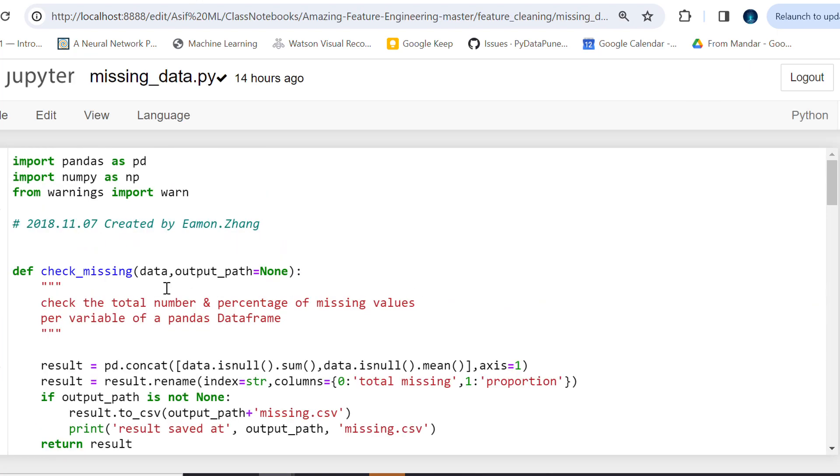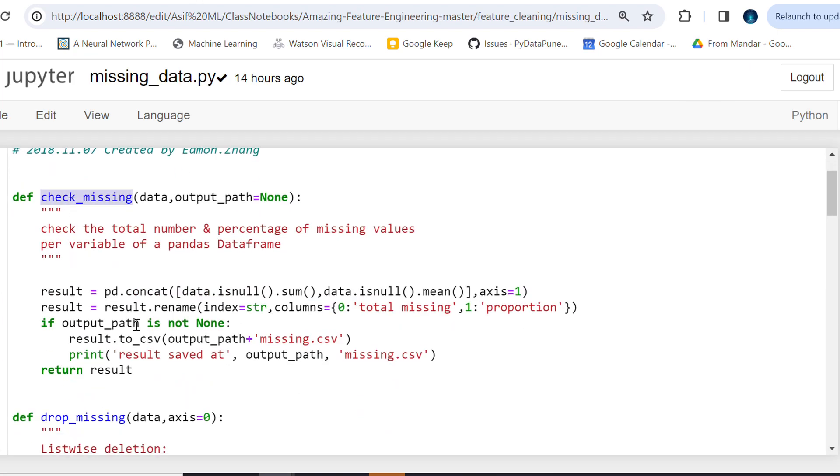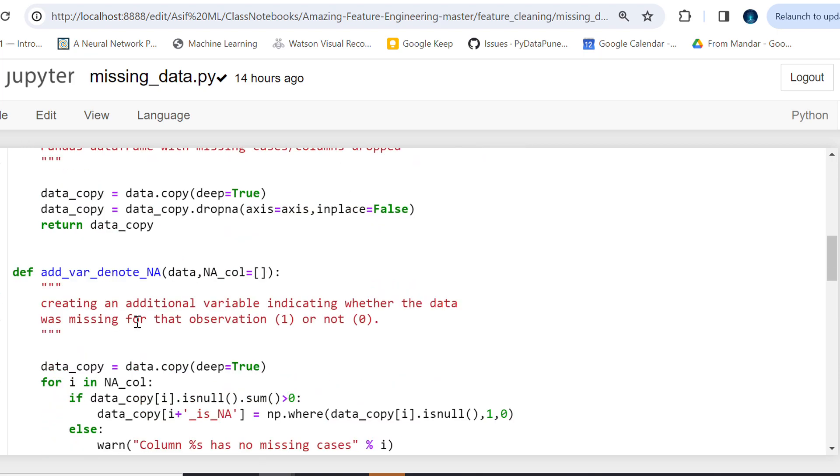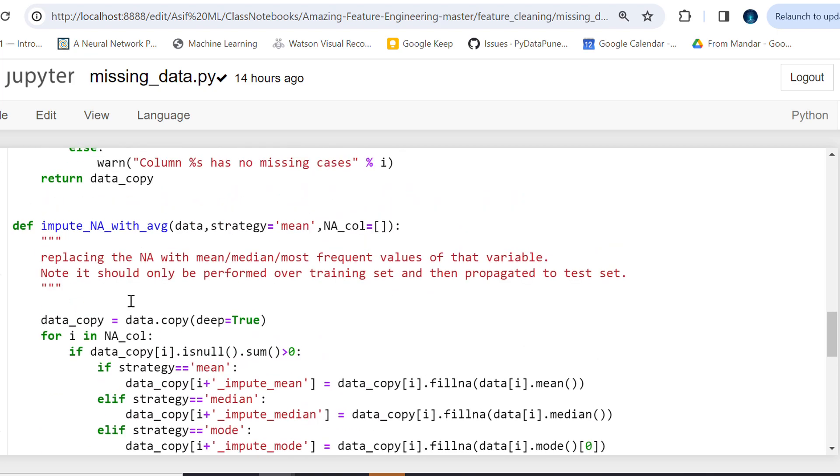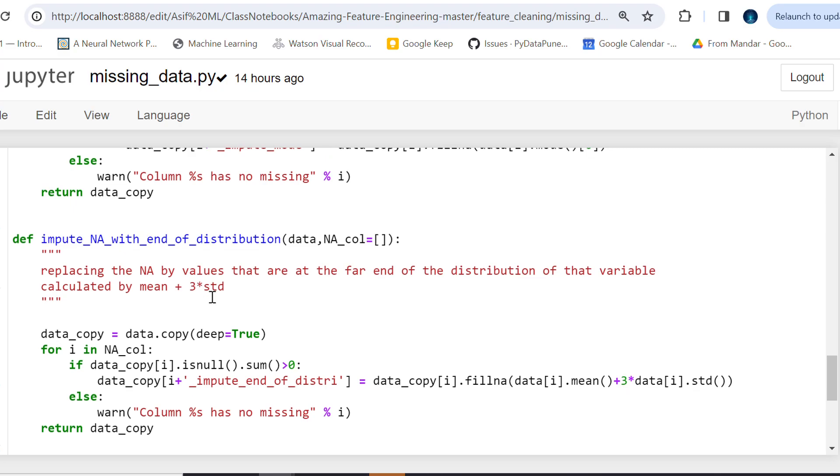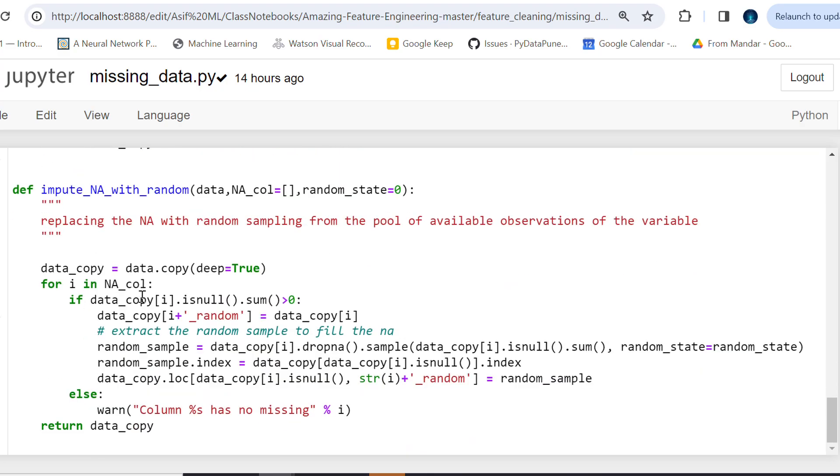It's really simple. We've created our own functions to check missing values, to drop missing values, to add variable and denote it by NA, impute NA—that means add NA with the arbitrary value—impute NA with the average, impute NA with end of distribution, impute NA with random values.